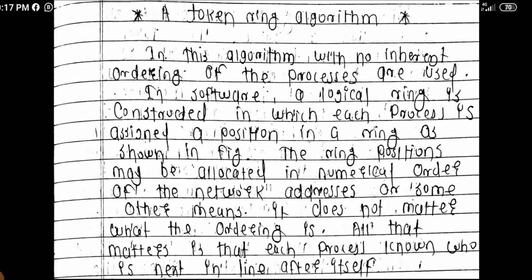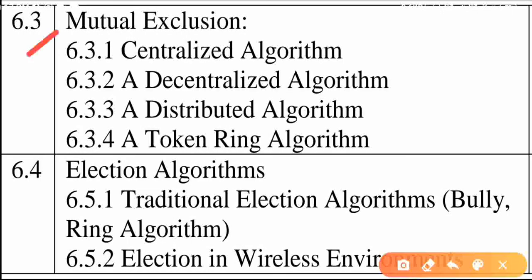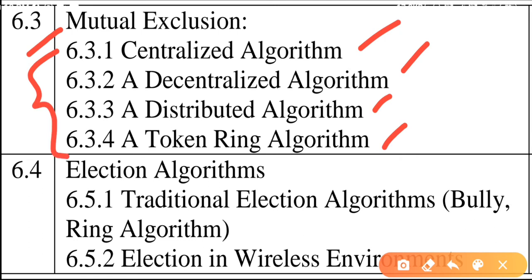In this way, mutual exclusion is maintained — only one process can access the resource at a time, similar to how a single search request is handled at a time. This is how this particular mutual exclusion technique works, and there are various different types of algorithms for achieving mutual exclusion.